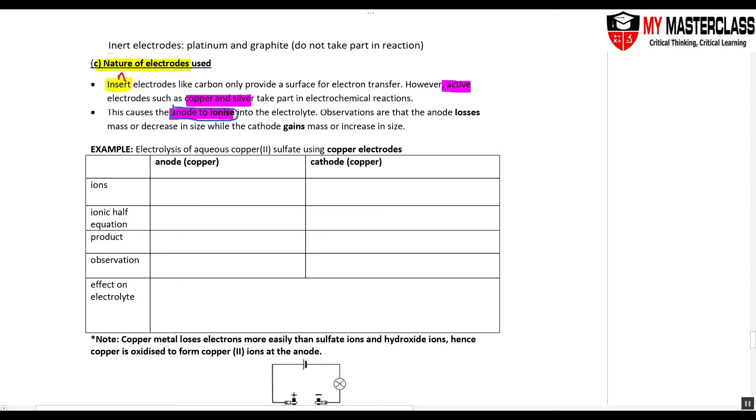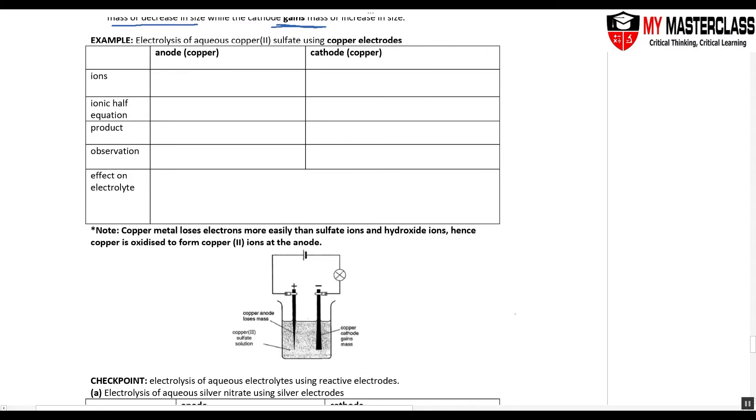So when your anode ionize, it loses mass or it decreases in size and the cathode will gain mass. So using an example, let's look at this picture over here.